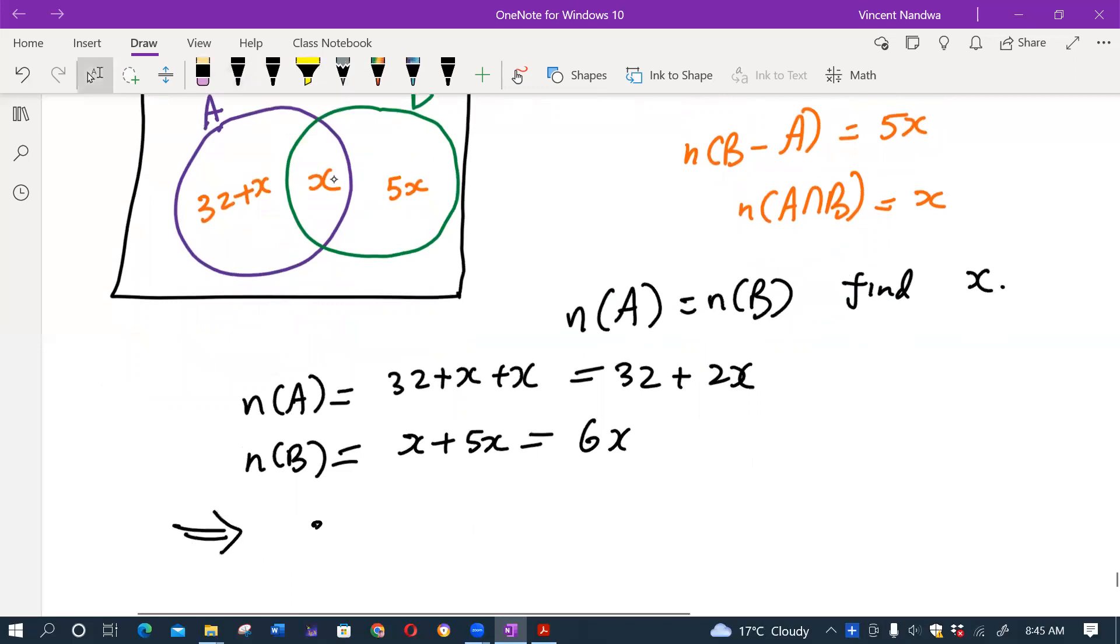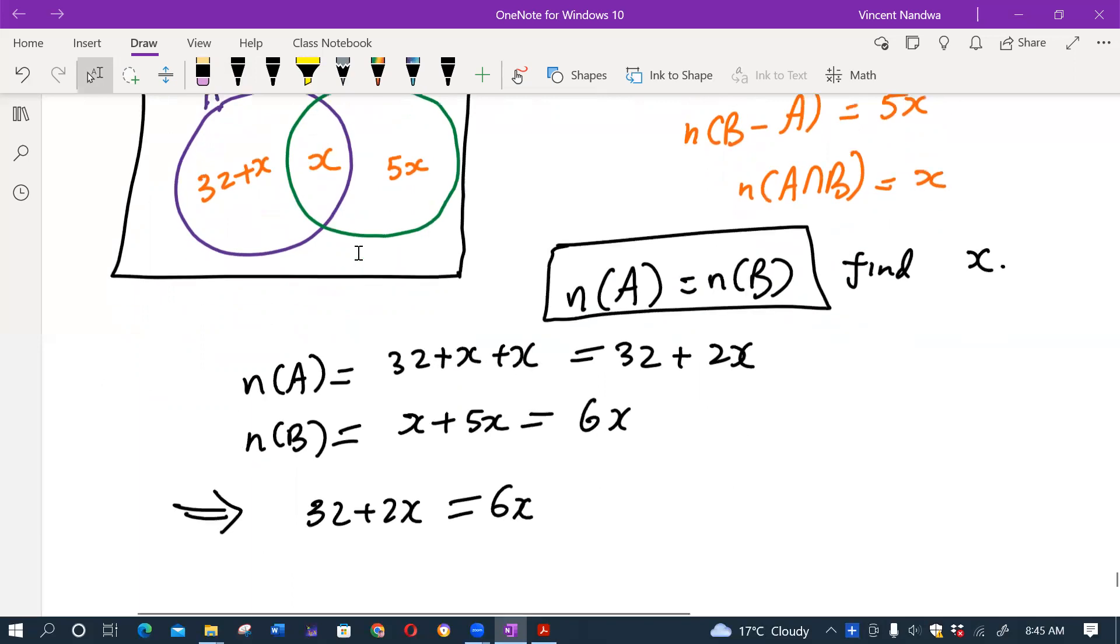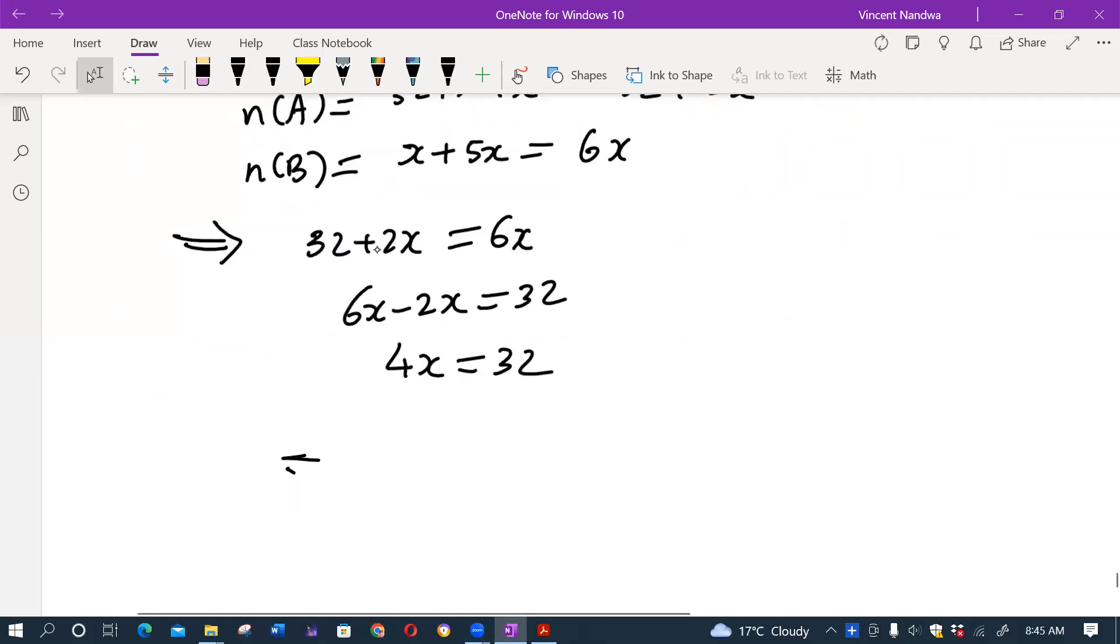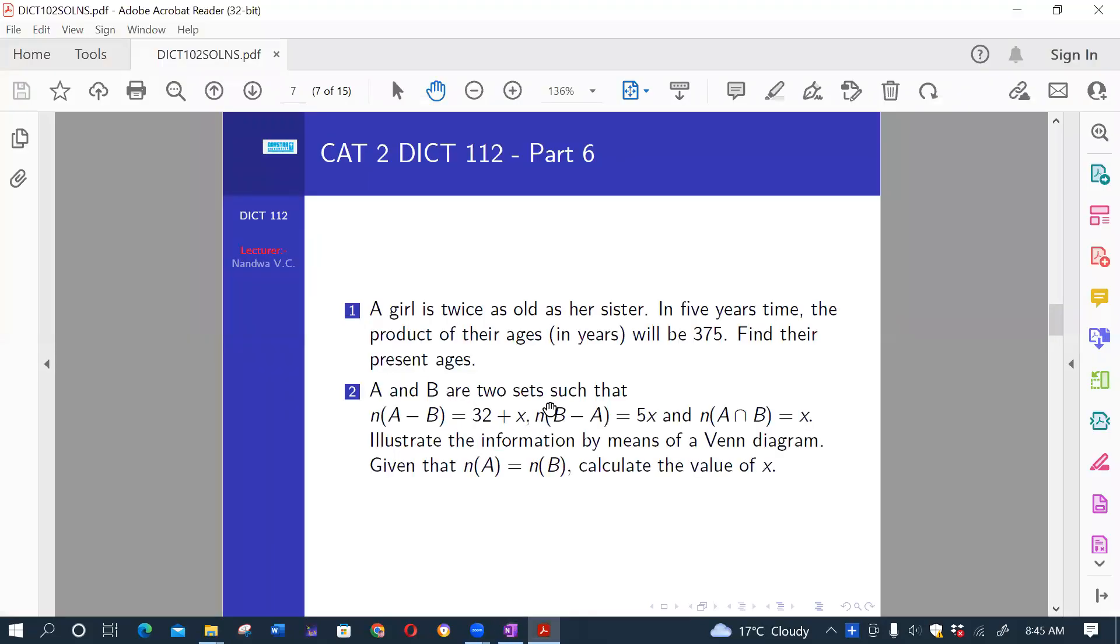So this implies that 32 plus 2x should be the same as 6x, because I've been told that the two cardinalities are the same. So 6x minus 2x equals 32, and clearly we get x to be 32 over 4. So x will be 8. That is how the second part was to be solved.